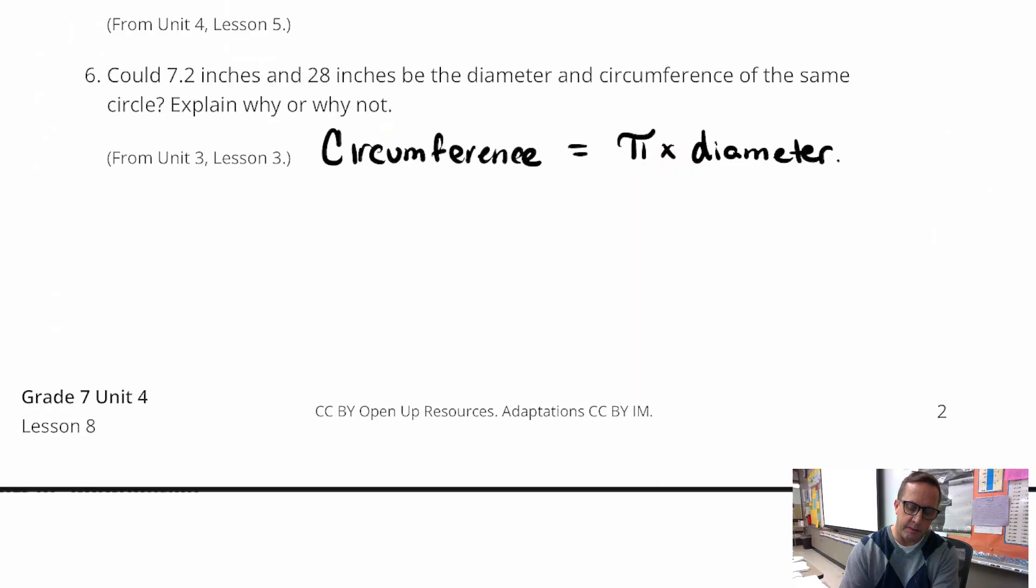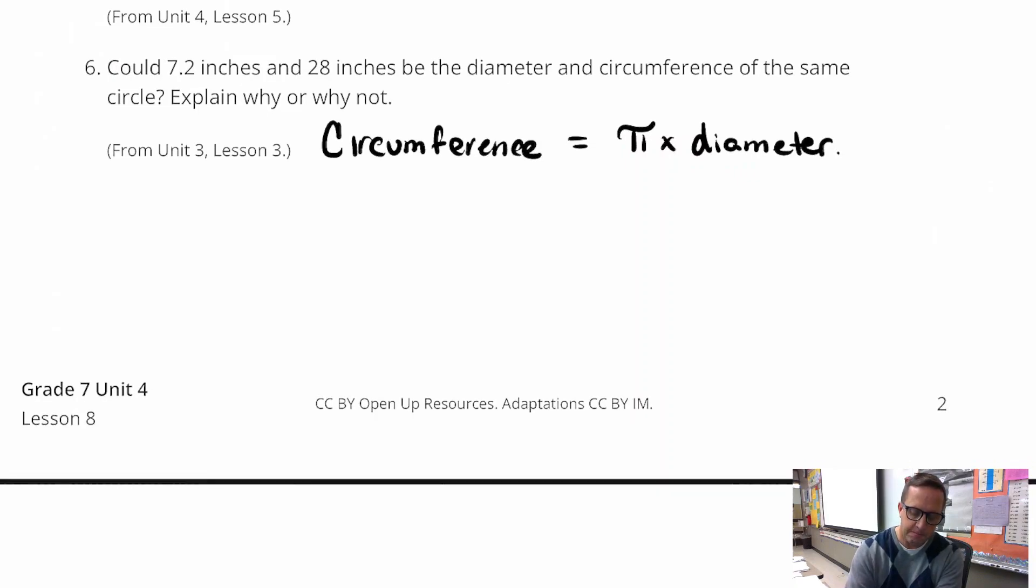And I'm assuming that 7.2 is the diameter. And so if we were to do 7.2 times 3.14, just basic estimate there, for pi. I don't think we're going to get 28. I get 22.608 inches, which is not true. So, I mean, that's not that far from 28 at all. But it's not, relatively speaking, it's not that close.